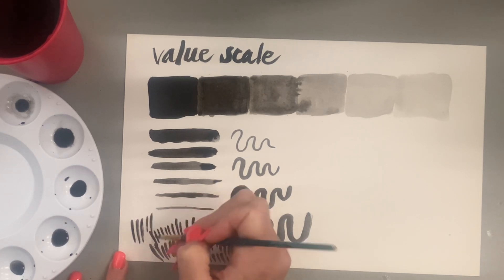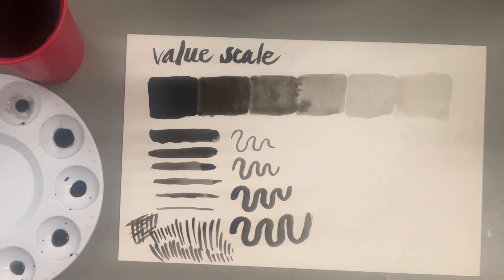Here's just some examples of different line variety, playing around with the different textures. I'm also playing around with the different values that I created, and I'm trying my hand at some cross hatching. So hatching are the small lines next to each other, and cross hatching is when you cross over them. That's a great, really fun satisfying way to create value when using ink.